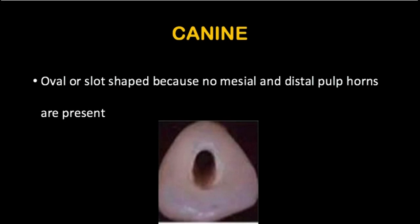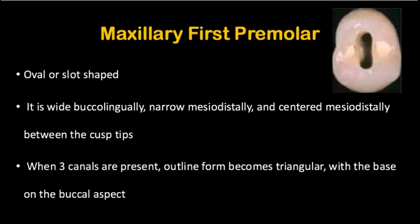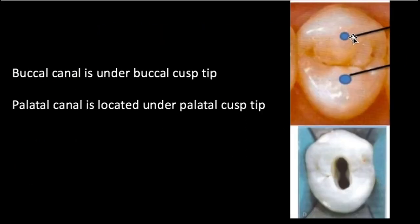Coming to your maxillary first premolar: the access opening will be oval or slot-shaped — wider buccolingually and narrower mesiodistally, and centered mesiodistally between the cusp tips. The buccal canal orifice will be present exactly below the buccal cusp tip, and the palatal canal will be present below the palatal cusp tip. In case three canals are present, the outline form will become triangular with the base on the buccal aspect.